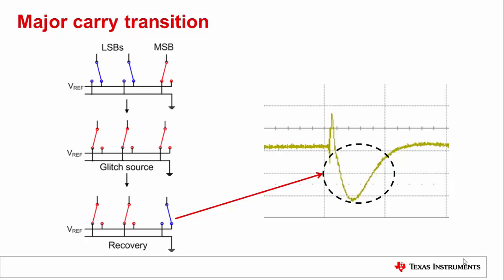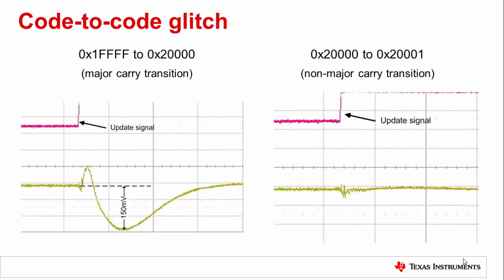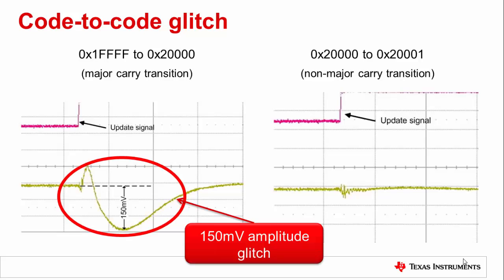Following this is the recovery time or small-signal settling time. Comparing side by side a major carry transition versus a non-major carry transition, we can see how large glitch is a result of a major carry transition, on the order of 150 mV. Both pictures on this slide show the DAC9881 stepping up one code. The picture on the left is crossing over a major carry-code transition, while the picture on the right is not.